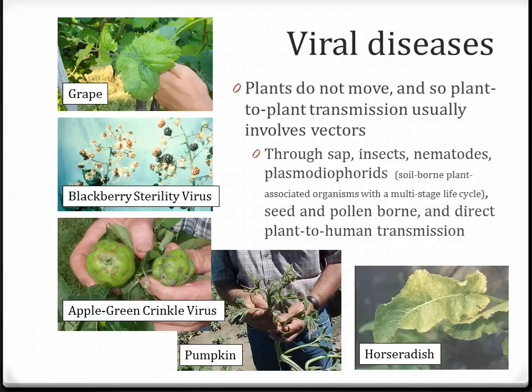It's not always the leaves that are affected — as with blackberries, the fruit can be affected as well. With pumpkins, the leaves can be greatly distorted, almost looking like 2,4-D injury, and the fruit itself will be mottled and distorted. Horseradish virus infection also shows a chlorotic or mosaic pattern on the leaves. Sometimes — though I don't have a picture here — you'll see a plant that looks very bushy and stunted, with very compacted internodes that almost looks like a broom on the plant. That's generally a sign of some sort of viral infection, though it can be caused by other things as well.